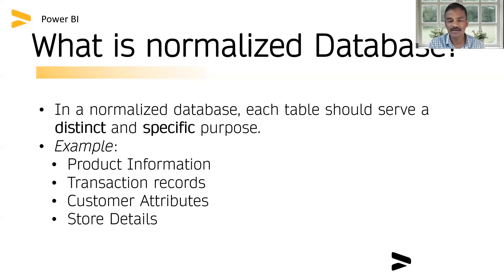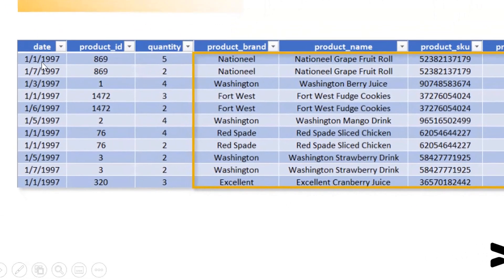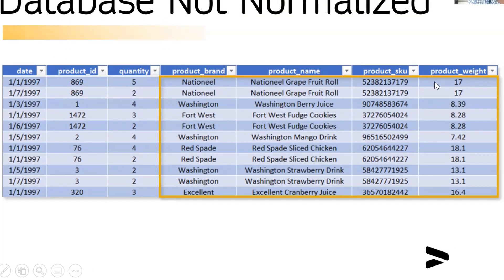For example, if you have a table with a date column, product ID, and quantity sold, there may be two records with the same product — the product brand, name, SKU, and weight are repeated. Those two records are the same, which means the data is redundant. With normalization, you separate these into distinct columns across two separate tables, keeping transaction columns in one table and product detail columns in another.